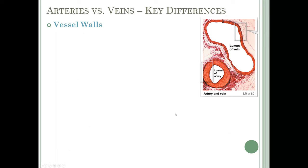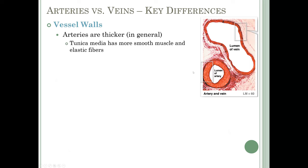Key differences between arteries and veins: first, the vessel wall. Arteries are much thicker in general because the tunica media has more smooth muscle and elastic fibers than in veins. This extra muscle helps arteries resist the higher pressures from the pumping heart. Blood goes heart → arteries → capillaries → veins, so arteries get the highest-pressure blood coming straight from the heart and must deal with those higher pressures.